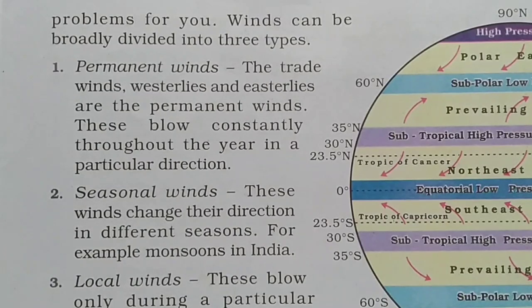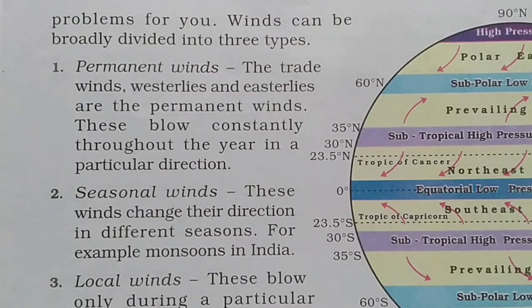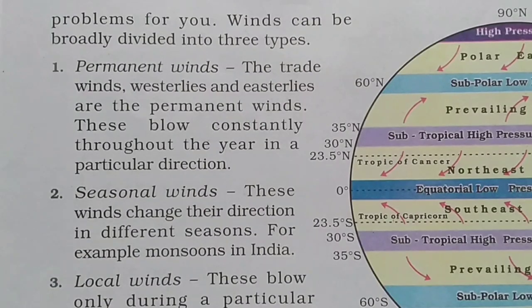Winds can be broadly divided into three types. First is permanent wind — the trade winds, westerlies, and easterlies are permanent winds that blow constantly throughout the year in a particular direction. Second is seasonal wind — these winds change their direction in different seasons; the example is monsoon in India.